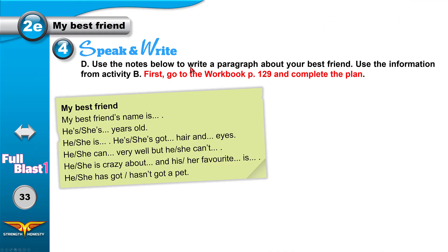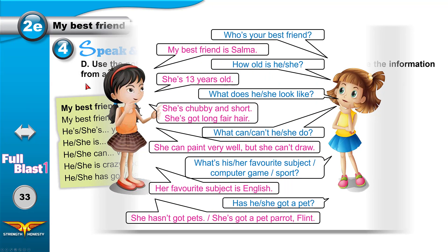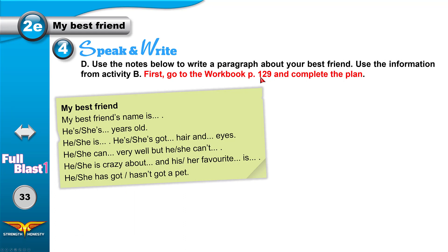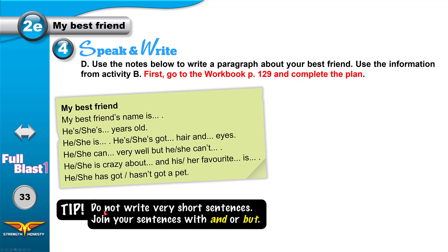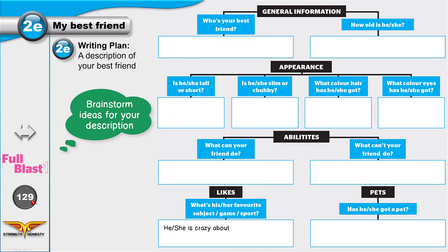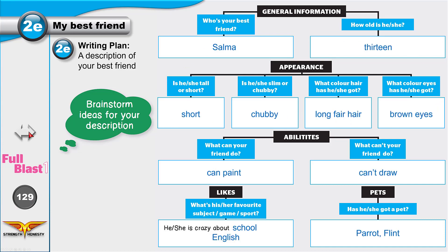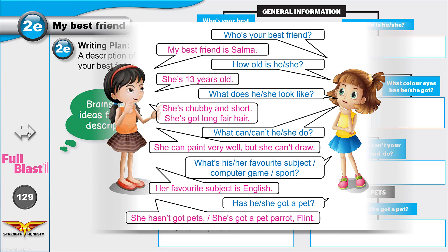Now use the notes below to write a paragraph about your best friend. Use the information from activity B. You have already talked about your best friend — use that information when you write. First, go to page 129 in your workbook and complete the plan. When you write, don't write short sentences — join your sentences using 'and' or 'but.' Let's go to page 129.